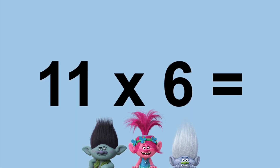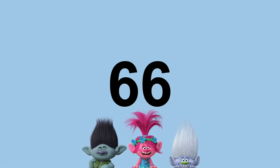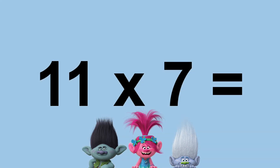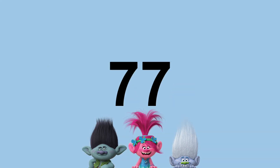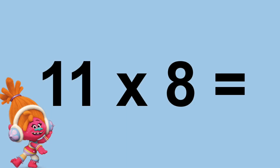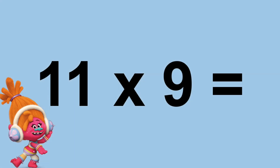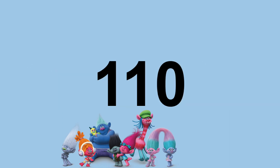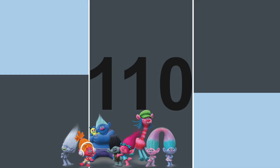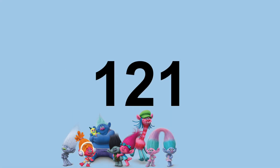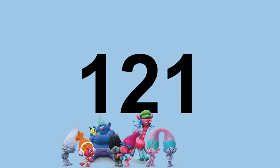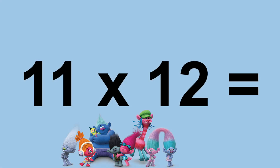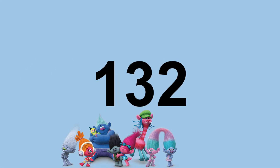Eleven times six equals sixty-six. Eleven times seven equals seventy-seven. Eleven times eight equals eighty-eight. Eleven times nine equals ninety-nine. Eleven times ten equals one hundred and ten. Eleven times eleven equals one hundred and twenty-one. Eleven times twelve equals one hundred and thirty-two.